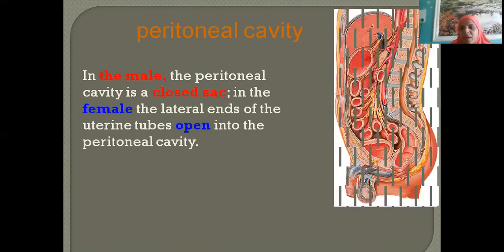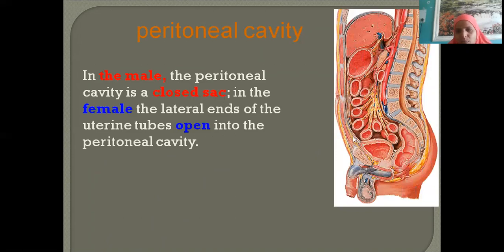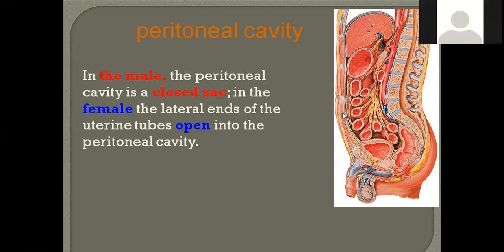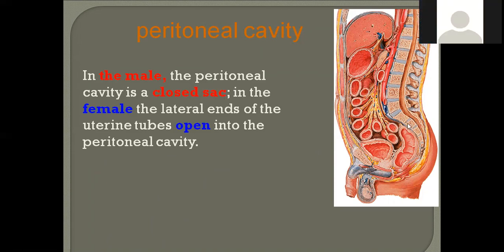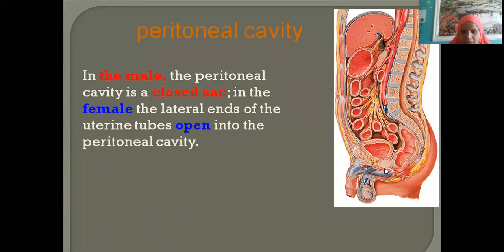Looking at the peritoneum covering the surface of the liver, coming down: this is the lesser omentum, this is the stomach, and this apron-like fold is the greater omentum going back to the transverse colon as transverse mesocolon. The many loops of small intestines are covered by mesentery. The peritoneal covering's journey returns to the rectum, anal canal, and urinary bladder.